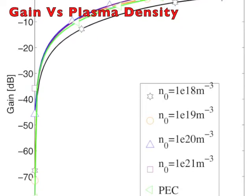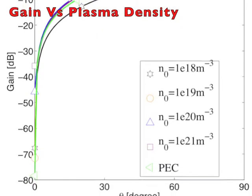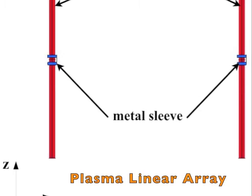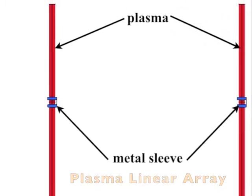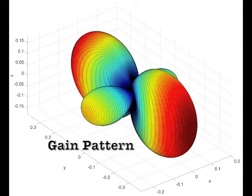The effect of plasma discharge parameters, like the density, on the radiation efficiency, reconfigurability and beamforming of plasma antennas has been analyzed in the frequency domain.